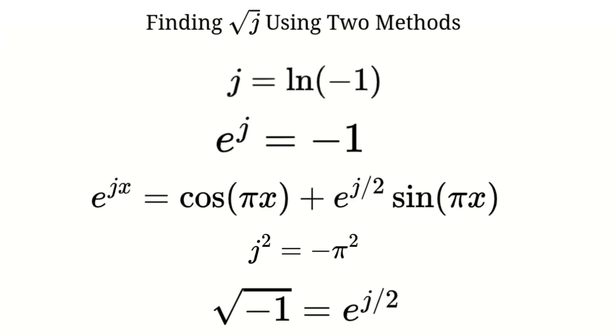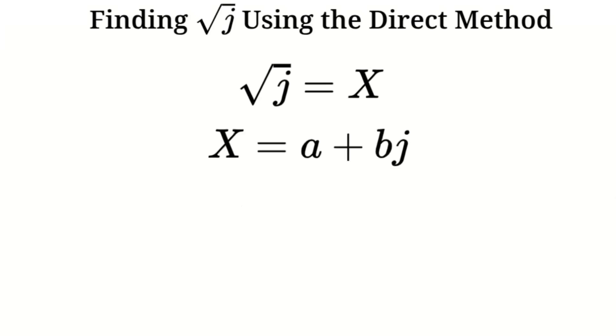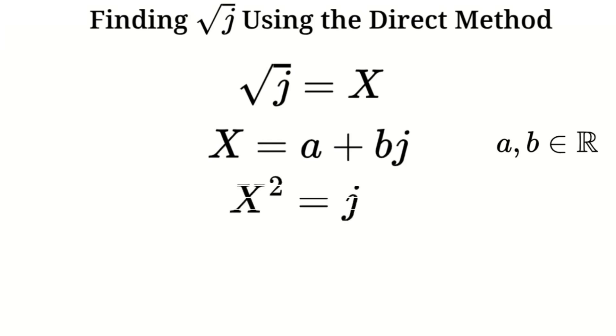Now that we have these fundamental properties in place, let's find the square root of j using two different methods. First we'll use the direct method, and then we'll verify our answer using the logarithmic method. To find the square root of j, we assume that √j equals x, where x is a virtual number of the form a + b·j. Here, a and b are real numbers that we need to determine. Our goal is to solve for a and b such that x² equals j.